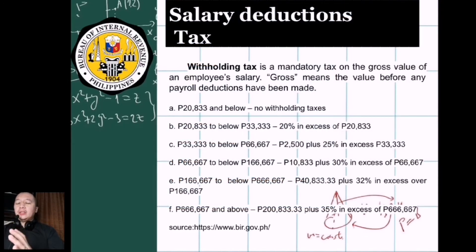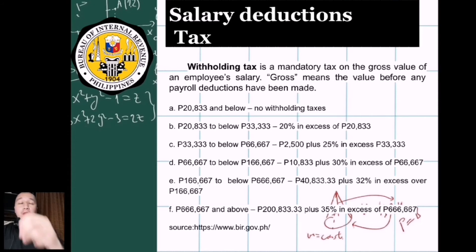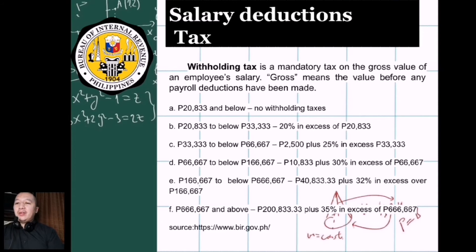The first and most important deduction is the withholding tax. Tax is a very large topic on its own, but it is a constant. There are only two things certain in life: death and taxes. From birth certificate to death certificate, someone will always be paying tax. It is mandatory on the gross value of an employee's salary.